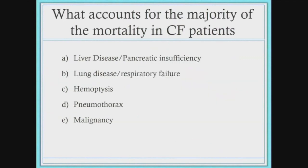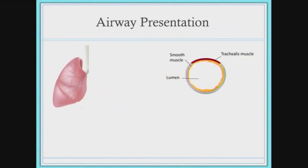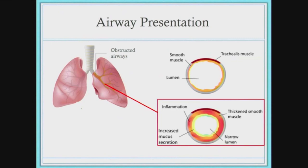Respiratory failure accounts for 90 percent of the mortality in CF individuals — a large amount. If you look at a healthy individual's airway, there's a very clear airway with thin mucosa and properly functioning smooth muscle. In an individual with cystic fibrosis, you have obstructed airways. Due to the CFTR mutation, there's an increased amount of mucus accumulating within the airway, resulting in increased inflammation and subsequent infection. Things inspired from the environment get lodged within the mucus, promoting infection.